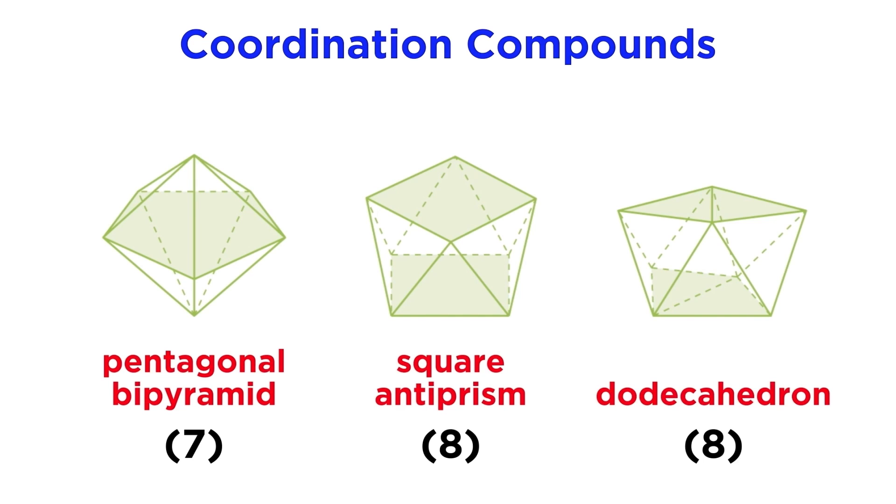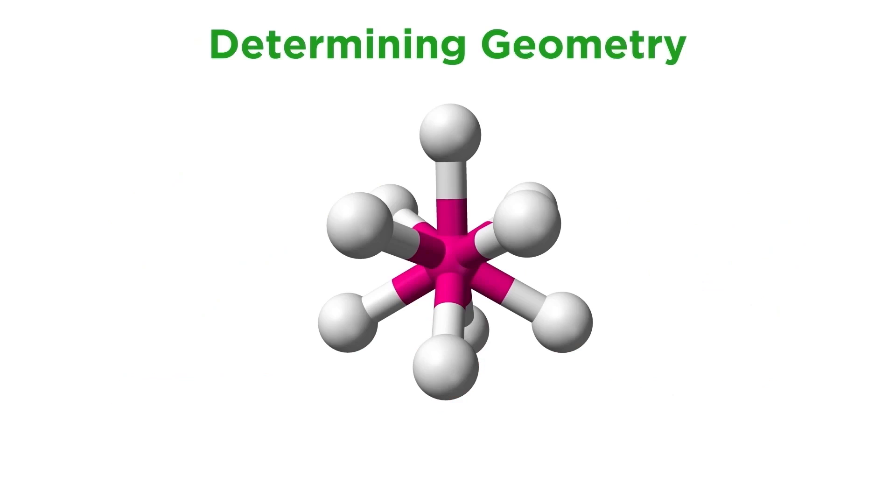Many of these do not follow the geometries expected from the VSEPR model due to details regarding non-bonding d-electrons. As we mentioned, a few coordination numbers offer more than one option for geometry, and the geometry adopted by the complex will depend on the precise set of ligands involved.